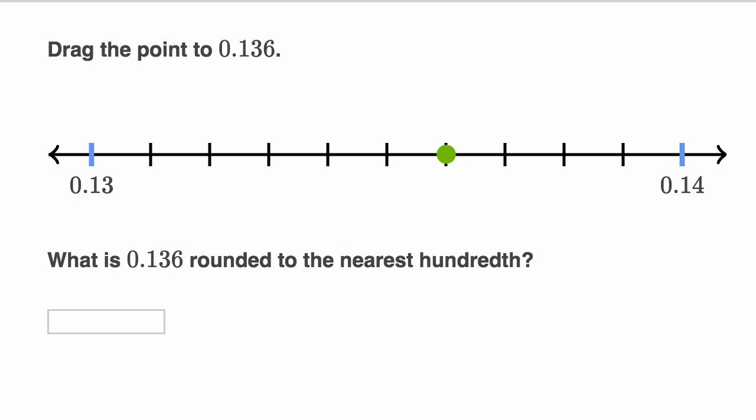136 thousandths or 0.136 rounded to the nearest hundredth. Well we have our hundredths in blue here. And which one are we closer to? Well we're closer to 14 hundredths, 0.14. And that's consistent with what we've seen in other cases where you look at the thousandths place and if it's five or greater, you round up. In this case you would round up to 14 hundredths.